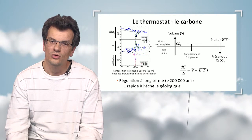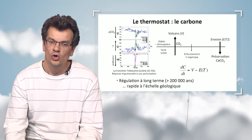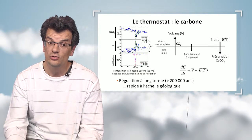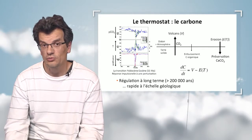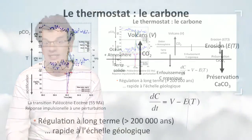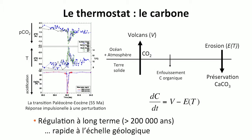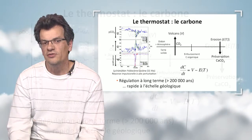Carbon on Earth is controlled by the volcanic source. The quantity of carbon increases in the atmosphere and in the oceans when volcanoes are active. Continent erosion generates precipitation of carbonates at the bottom of the ocean, and erosion decreases the quantity of CO2 in the atmosphere. The warmer the climate, the bigger the erosion — and this phenomenon controls temperature on the Earth's surface over geological time scales.